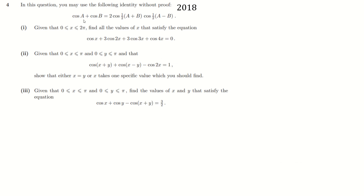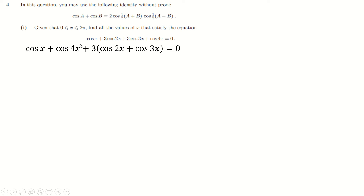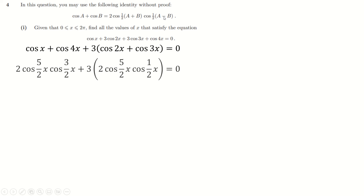The other question I wanted to do was from 2018. In this question, we may use this first result without proof, which is very kind of them. Given that x is in the specified range, let's solve this. Let's group the terms — cos(x) and cos(4x) first, then three lots of the other two things. Using the result with a = x and b = 4x, we get a+b = 5x, halved is 5x/2, and b−a = 3x, halved is 3x/2. For cos(2x) and cos(3x): 2+3 = 5, 3−2 = 1, giving those two terms.